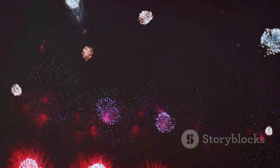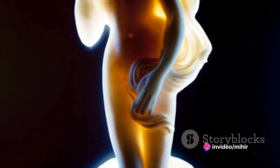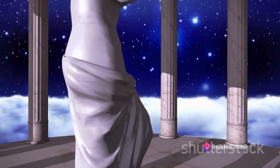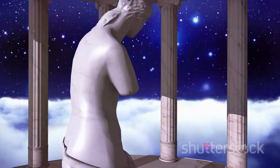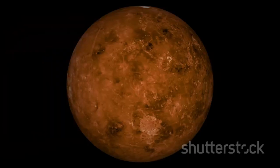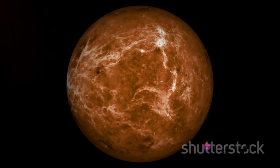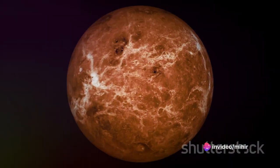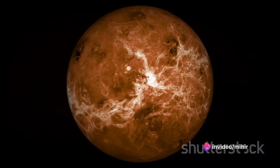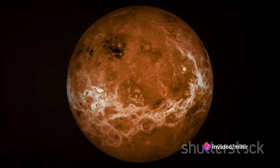Next in line from the sun, we find Venus, Earth's sinister twin. Named after the Roman goddess of love and beauty, Venus is anything but hospitable. Its surface temperature can reach up to 867 degrees Fahrenheit, making it the hottest planet in our solar system. The thick, toxic atmosphere creates a greenhouse effect that traps heat leading to these extreme temperatures.